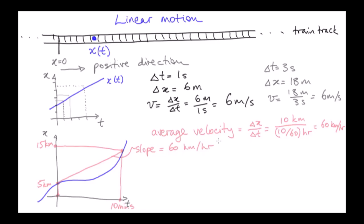If the train had had a constant velocity for those 10 minutes, the x of t curve would look like that red line. Now what further information does the blue curve tell us?